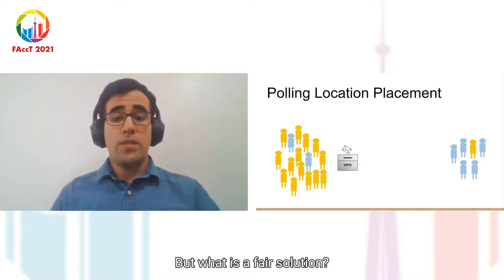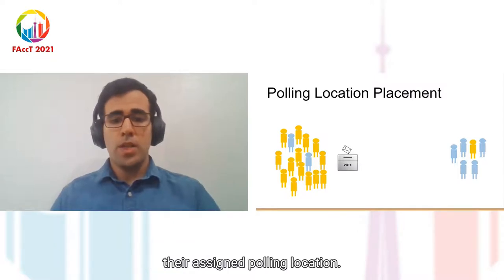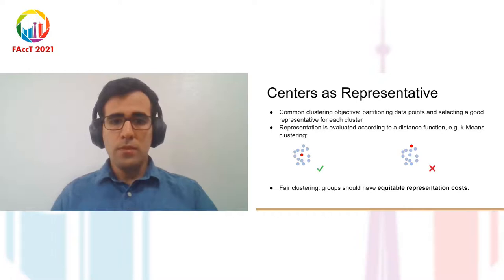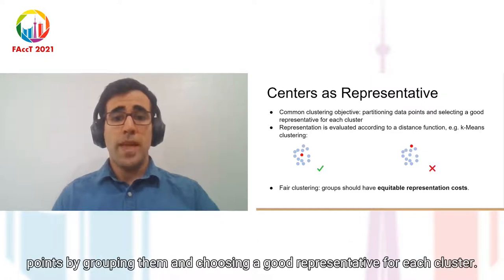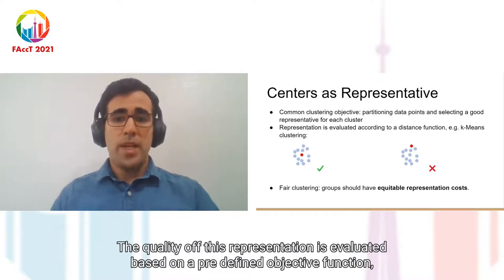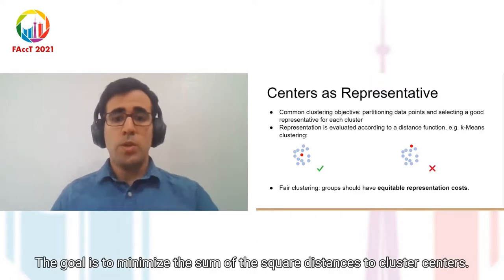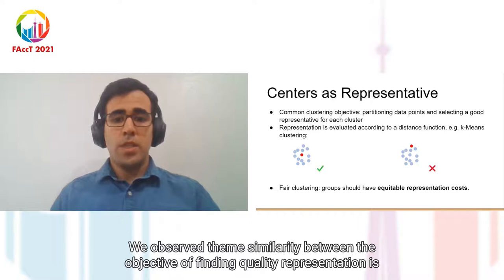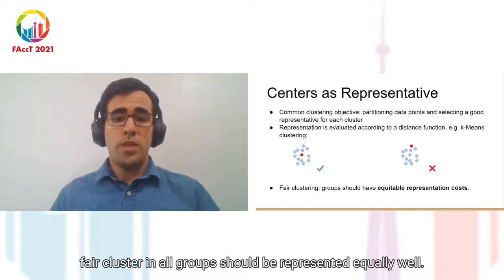But what is a fair solution in this setup? We advocate a solution where members of different groups face equal distance to their assigned polling location on average. One of the most common objectives of clustering is to find representatives of data points by grouping them and choosing a good representative for each cluster. The quality of this representation is evaluated based on a predefined objective function, which is often distance-based.